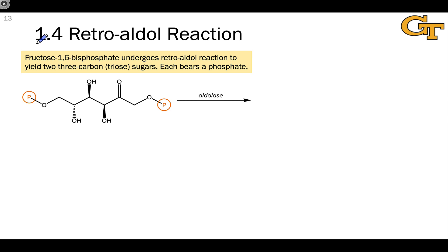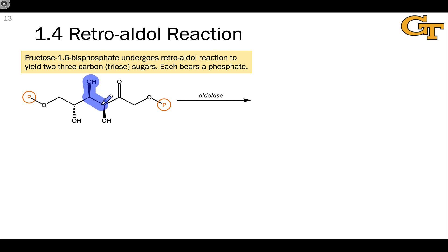The key step of stage one is really step 1.4, the retroaldol reaction of fructose bisphosphate. To understand this reaction, I first wanted to look at fructose bisphosphate and analyze it in the light of the aldol reaction, thinking retrosynthetically — thinking backwards — because the reaction catalyzed by the aldolase enzyme is a retroaldol reaction. Recall from our earlier discussions that the aldol reaction forms a beta-hydroxycarbonyl product, and we can find the beta-hydroxycarbonyl motif within fructose bisphosphate, with the atoms involved highlighted here in blue.